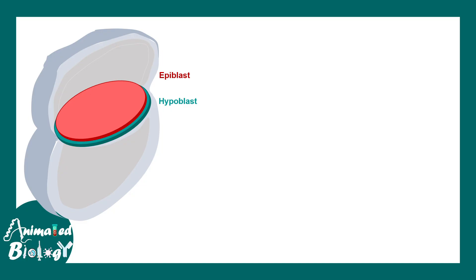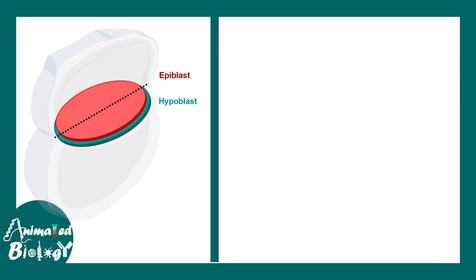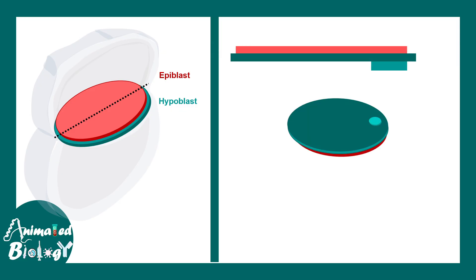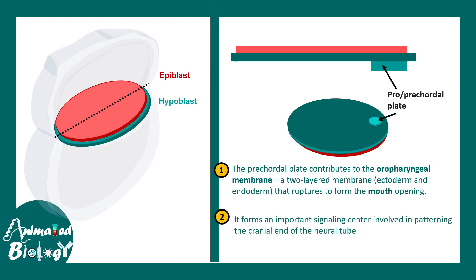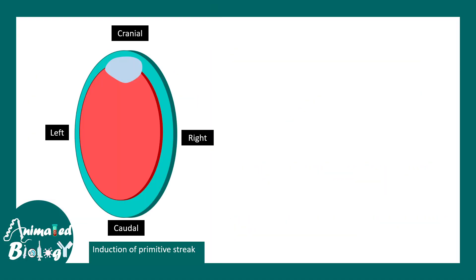Looking at the epiblast and hypoblast from a top view, and taking a cross section, one important thing to note is that there is a precordial plate which defines the cranial end of the embryo. The precordial plate contributes to the oropharyngeal membrane — a two-layered membrane that would eventually be ruptured to give rise to the mouth opening. This precordial plate also works as an important signaling center, which is crucial for neural tube formation.